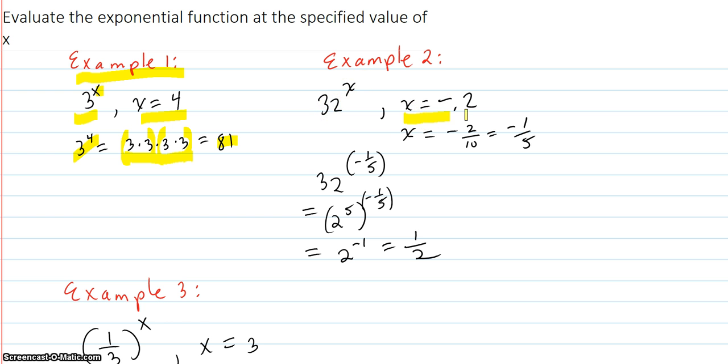32 to the x for x equals negative 0.2. That doesn't seem like that would work out nice. But negative 0.2 is negative 2 tenths, and that reduces down to negative 1 fifth.